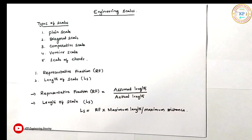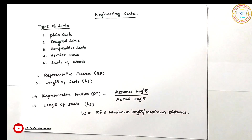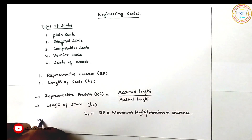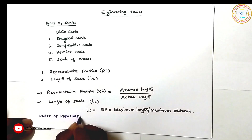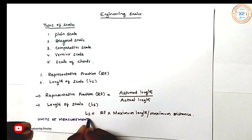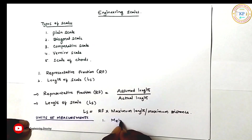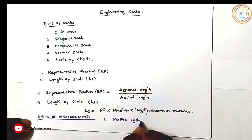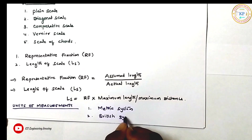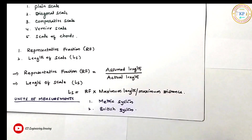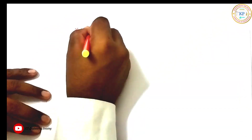To draw these scales, we need some conversions — that is, we need some units of measurements. Units of measurements are of two types: one is the metric system of measurement, and two is the British system of measurement. First, we will see the metric system of measurements.